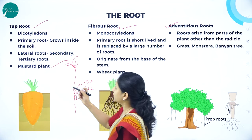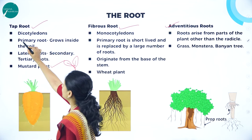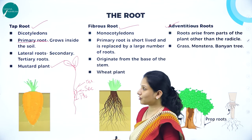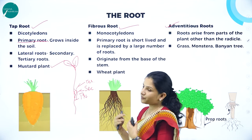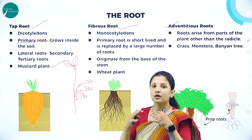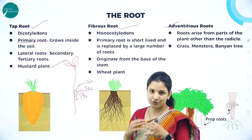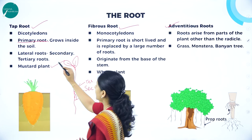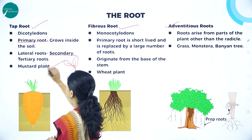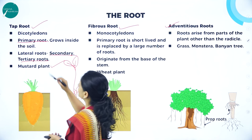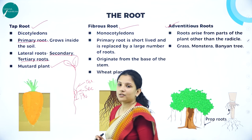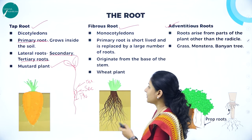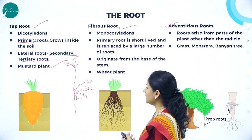In the taproot system, the primary root first extends and grows into the soil. From the primary root, all the lateral roots — that is, the secondary root and tertiary root — arise, and they are called the lateral roots. The best example is the mustard plant.